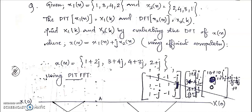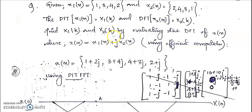You must read the question carefully. Using a single four-point DFT algorithm, you want to compute the DFT of x1(n) and x2(n). You already studied about the theory behind that.